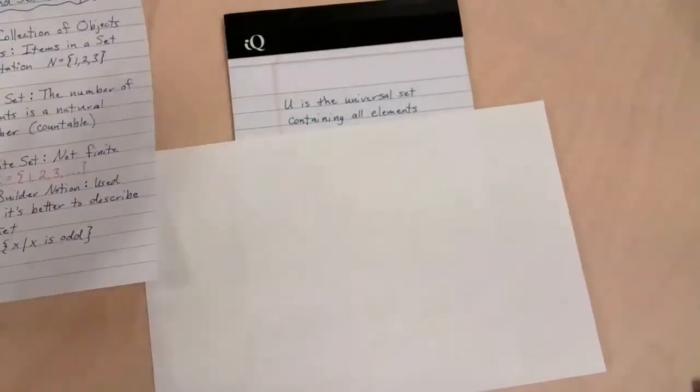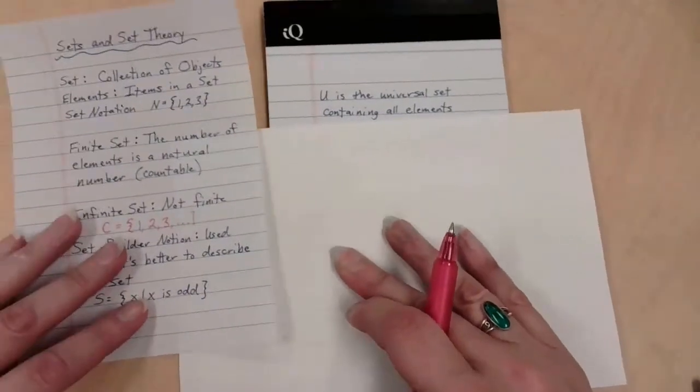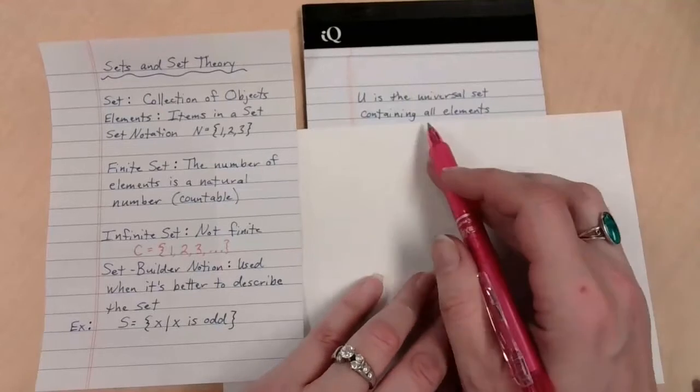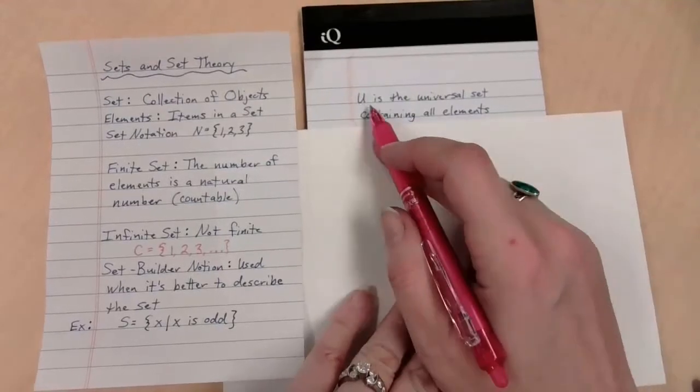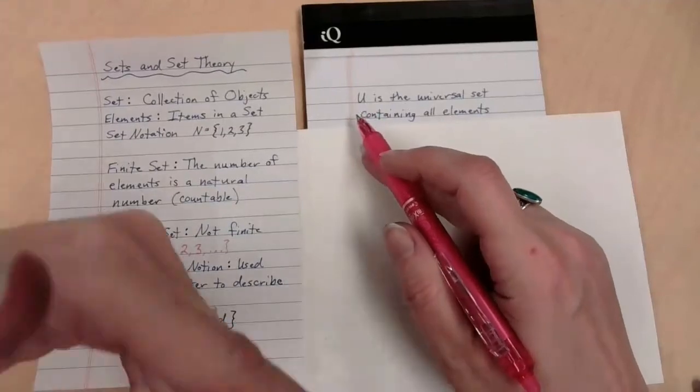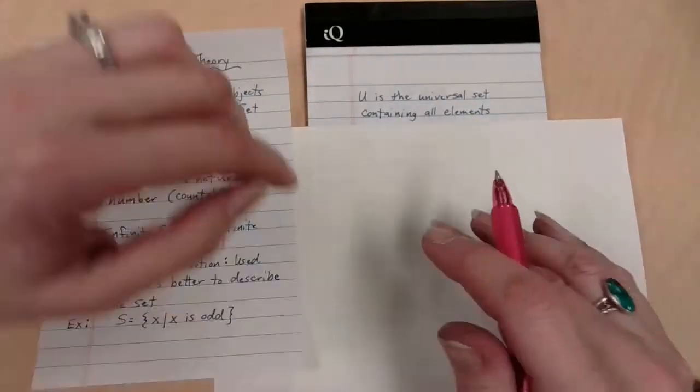Let's take a look at what's next. U, that's the capital letter U, is known as the universal set. It contains all elements. So if you see U, you don't have to wonder which numbers are going to be in that set. All numbers, all elements are in the set U.